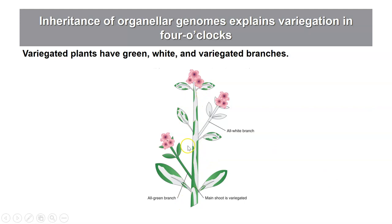A variegated four o'clock plant can have several types of structures. A stem that's completely green means all cells have wild-type chloroplasts producing chlorophyll — that's also true for the flowers and the gametes they produce. A different stem that's all white means all cells have mutant chloroplasts unable to produce chlorophyll, and they will produce mutant ovules and mutant pollen grains. On a variegated stem, some cells have wild-type chloroplasts and some have mutant, which is also true for the flowers and the gametes — some will be wild-type and some will be mutant.